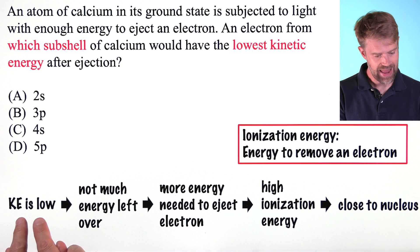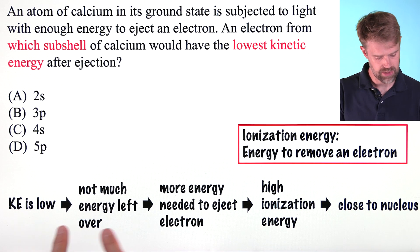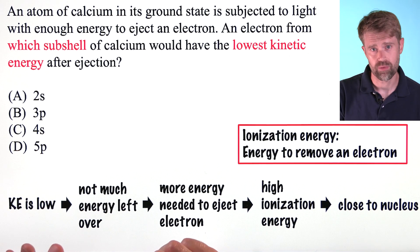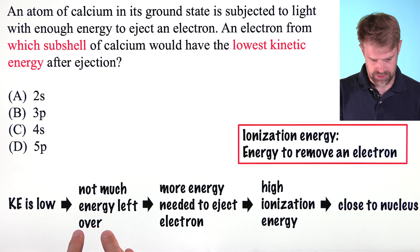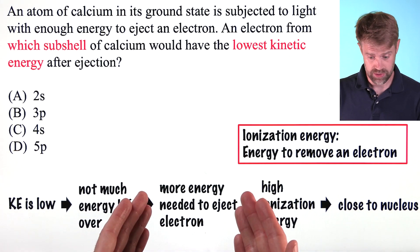If the kinetic energy of the electron is low, that means that there wasn't much energy left over after the electron was ejected. That means that more energy was needed to eject the electron in the first place,